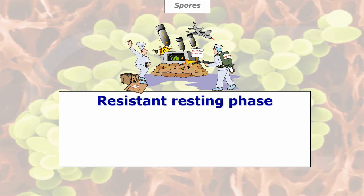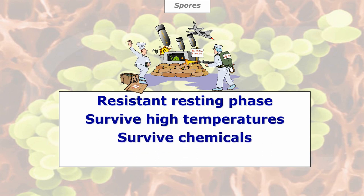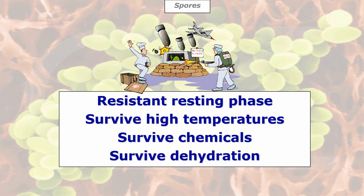Spores are a resistant resting phase for certain bacteria — only two families of bacteria can form them. When conditions become unfavorable, bacteria go into hibernation by turning themselves into a spore — think of it like a dried, protected seed like an M&M with a crispy shell on the outside, with the bacteria staying dormant inside. Spores — not bacteria — can survive high temperatures in excess of two and a half thousand degrees C, survive chemicals such as sanitizers and disinfectants, and survive dehydration, lasting many thousands of years in soil and dry conditions.